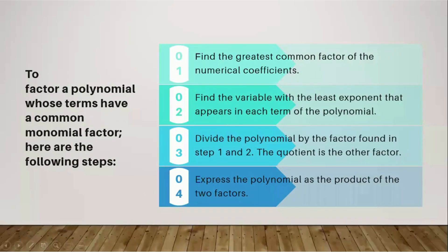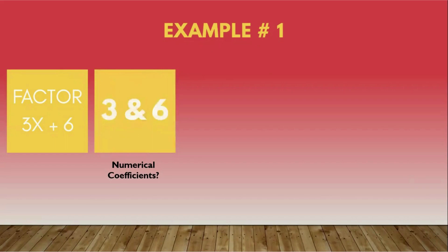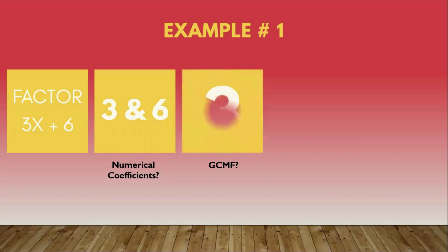Let's proceed with our first example: factor 3x + 6. The first thing to do is check the numerical coefficients of the polynomial. The numerical coefficients are 3 and 6. Then check if they have the same variable — they do not. So let's find the GCMF. The greatest common factor of 3 and 6 is 3, because we can divide both 3 and 6 by 3.